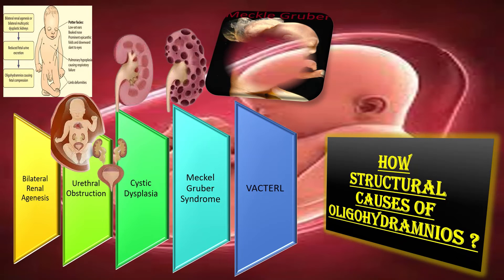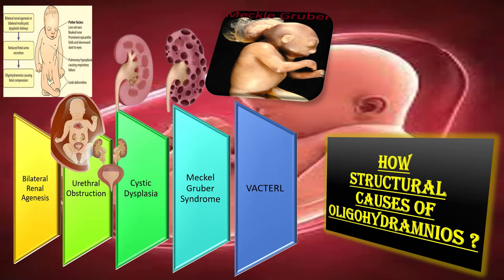What happens in Meckel-Gruber syndrome? In Meckel-Gruber syndrome there is the classical triad of occipital encephalocele, polycystic kidney, and post-axial polydactyly. Cysts develop first in the glomeruli in the cortex, and cystogenesis progresses along the tubules and the collecting duct in the medulla. Abnormal fetal renal function is a frequent cause of oligohydramnios or anhydramnios, which is a common complication of Meckel-Gruber syndrome.